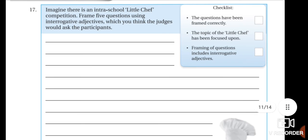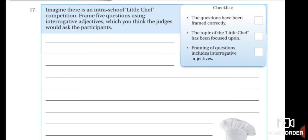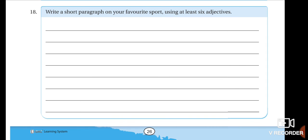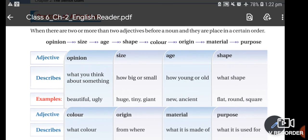You also have another homework in your workbook. Question number 26, question number 27, and question number 17: imagine there is an intra-school little chef competition — you have to frame five questions using the interrogative adjectives you learned in our previous session, which you think the judges would ask participants. Make sure you include all the points given in the checklist. Question number 18: write a short paragraph on your favorite sport using at least six adjectives.